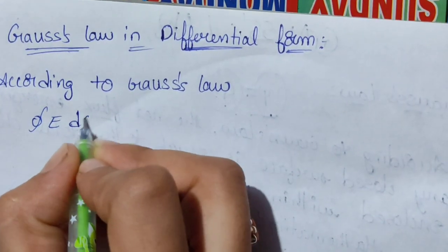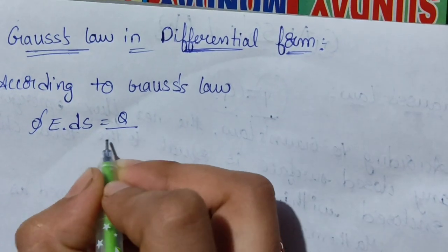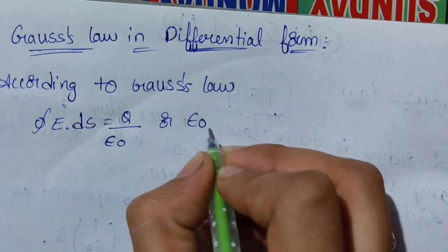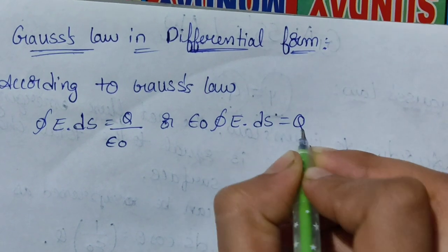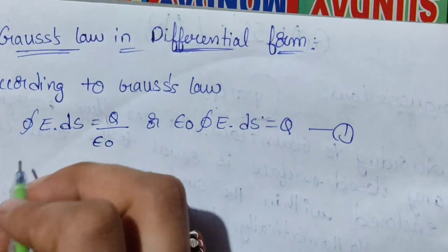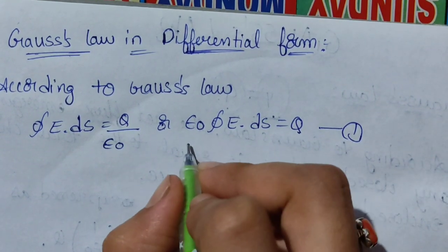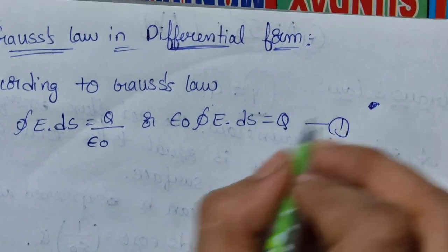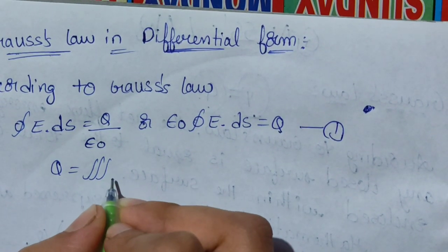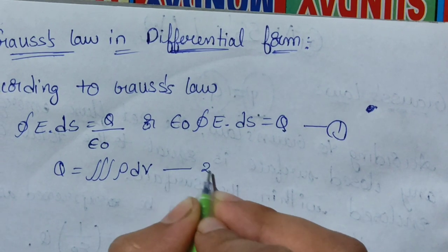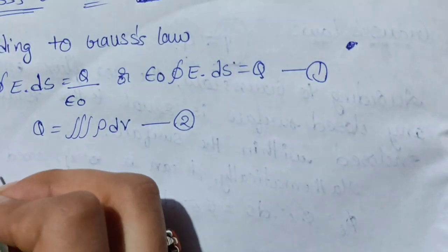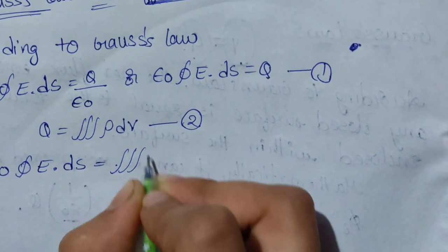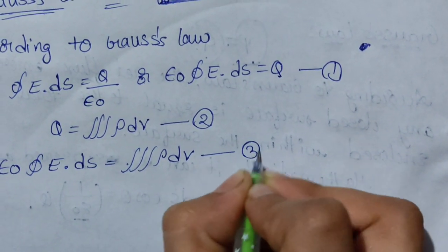According to Gauss's Law, ∮ E · dS = Q / ε₀. Rearranging: ε₀ · ∮ E · dS = Q — keep this as equation 1. Let Q be the charge distributed uniformly over the volume V, so Q = ∫ ρ dV — keep this as equation 2. Substituting: ε₀ · ∮ E · dS = ∫ ρ dV — keep this as equation 3.